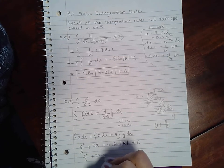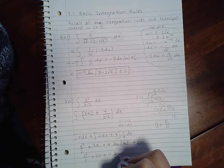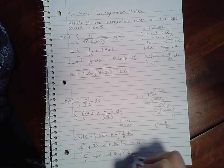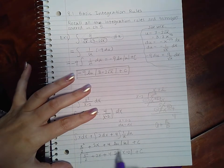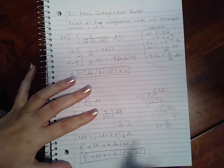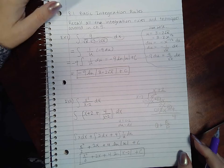So this becomes x squared over 2 plus 2x plus 4 ln of the absolute value of u plus c. Then back-sub: u was x minus 2, which is again not always positive, so you do need to keep the absolute value bar in your final answer.